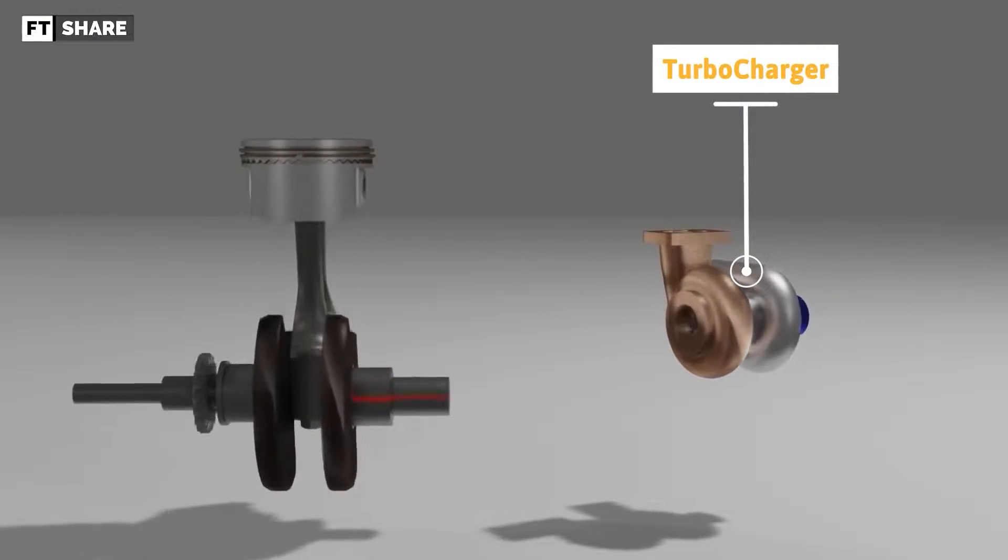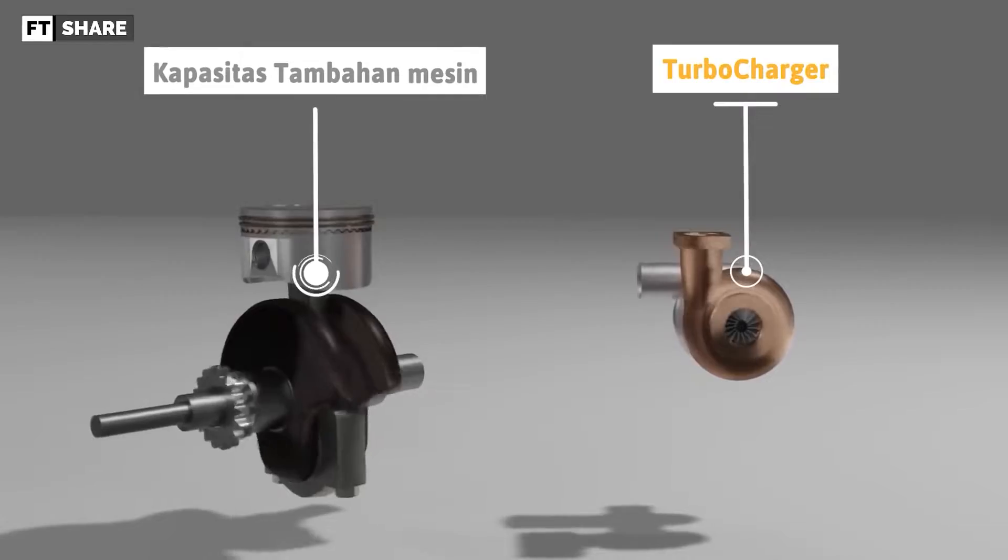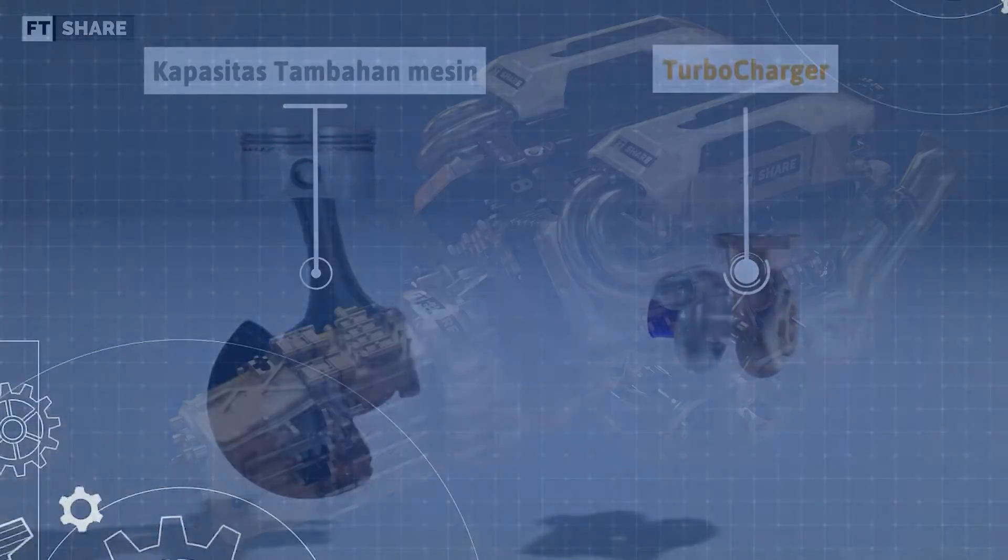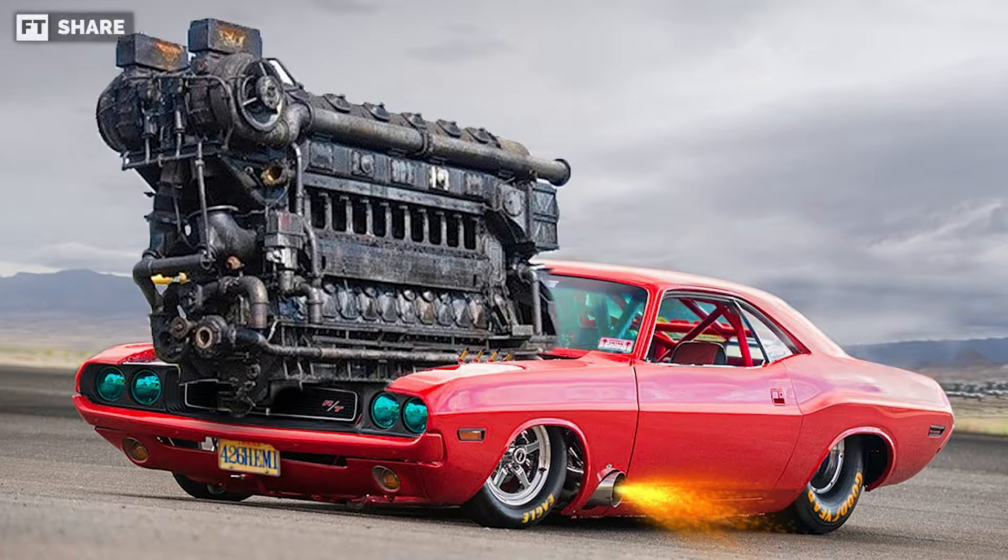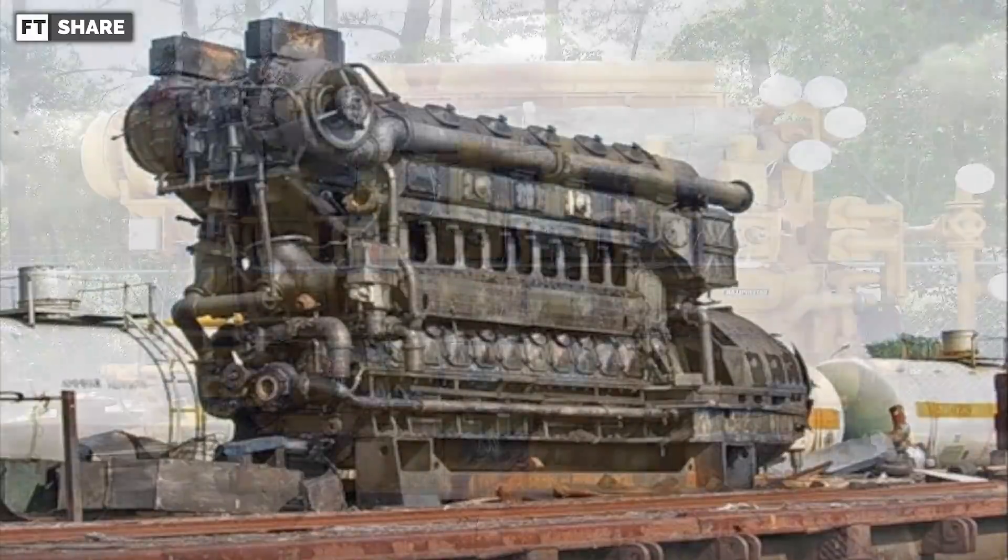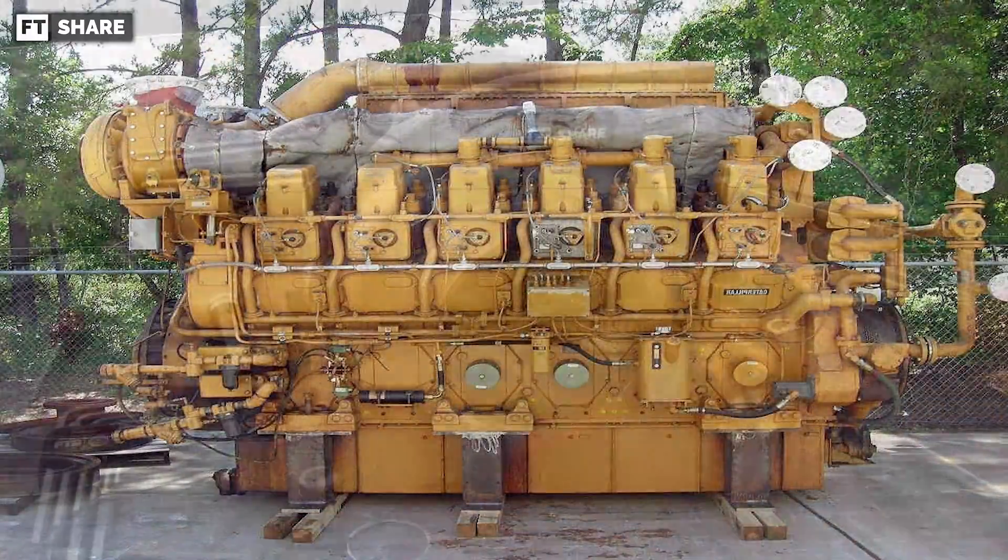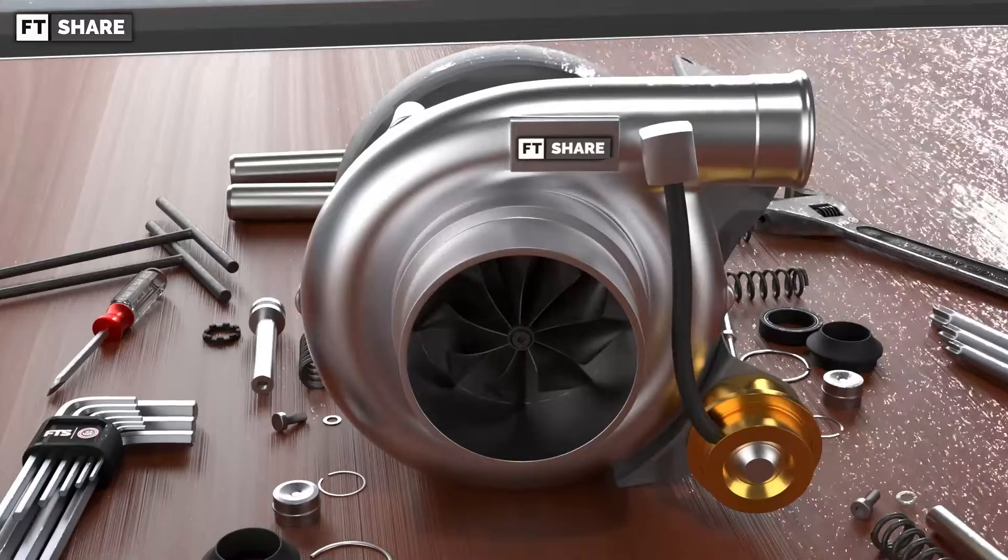It's true that you can still get more power without a turbocharger. You can do this by making the engine bigger, but as we all know, the bigger the engine, the bigger the moving parts inside it. This means there'll be more weight and space to think about, which will make the engine less efficient in terms of fuel consumption and engine-based space. But with a turbocharger, you can get around this problem.